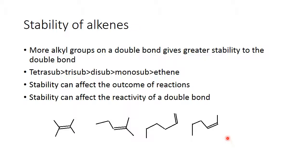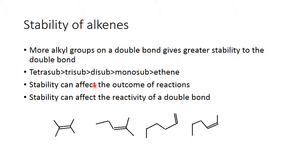The order of stability is based on how many alkyl groups are attached to the double bond. The one with only one alkyl group is the least stable of the four. The one with two alkyl groups is next least stable, then three, and the most stable of all is the one with four alkyl groups. So ordering from highest to lowest stability: four, three, two, one alkyl groups.